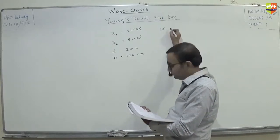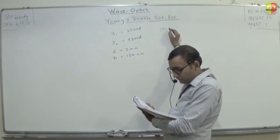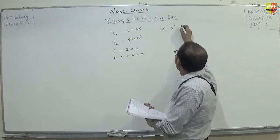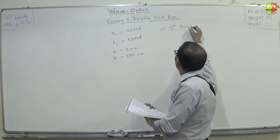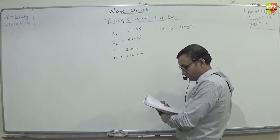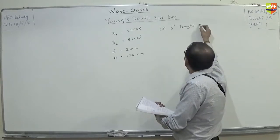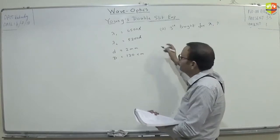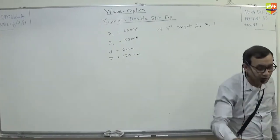Part A. Distance of third bright fringe for lambda-1. This is how much. First do this. Then we go to next part. Quickly.